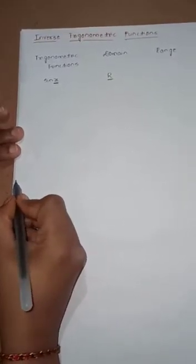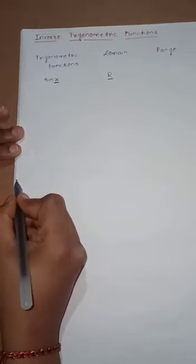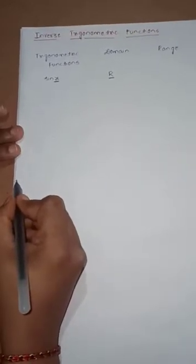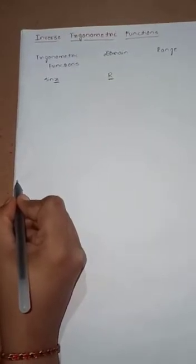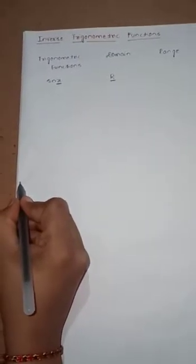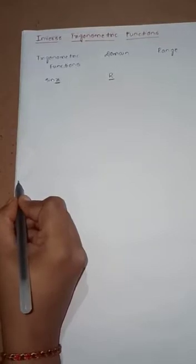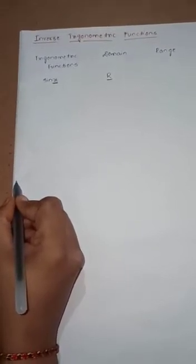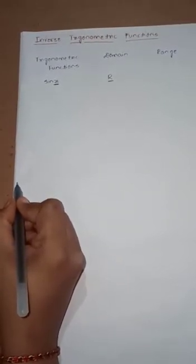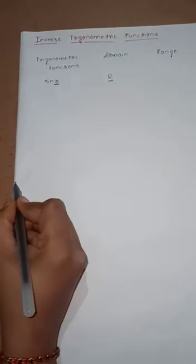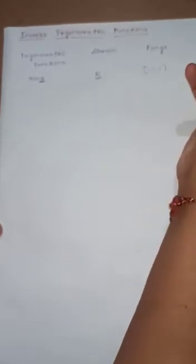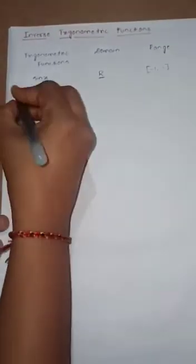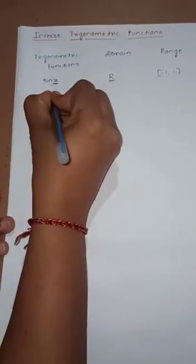The maximum value of the sine function is +1, and the minimum value is −1. Since sin(−90°) = −sin 90°, using the identity sin(−θ) = −sin θ, the range of the sine function is the closed interval [−1, +1]. You learned this in first year as well. Next, the function is cos x.